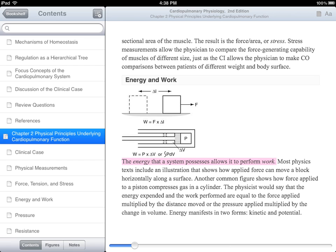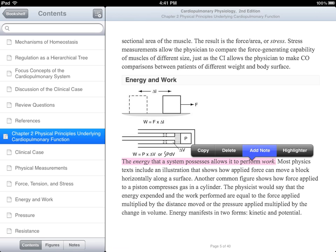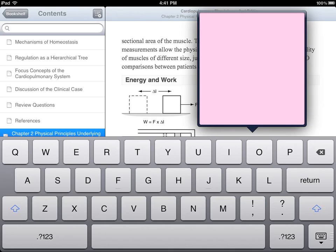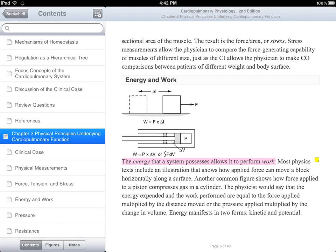To add a note to this highlight, tap anywhere on the highlighted passage. Then tap on the Add Note button. A text box will then appear where you can enter your note. When done, tap outside of the box to return to the book.